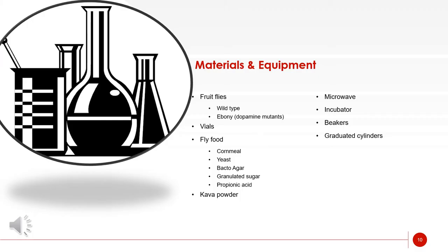For materials and equipment, I used microwaves, incubators, beakers, and other small equipment such as graduated cylinders. My main materials were the fruit flies — the wild type and the ebony type, which were dopamine mutants — as well as the vials to keep them in. I also made fly food from cornmeal, yeast, bacto-agar, granulated sugar, propionic acid, and kava powder, which I had to purchase and have shipped from the South Pacific.